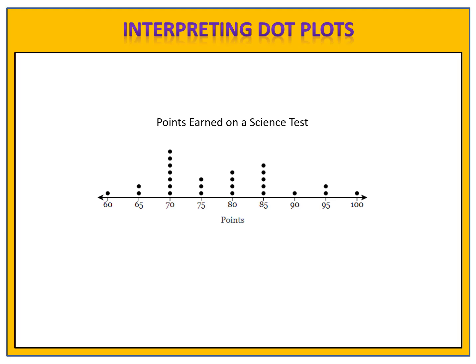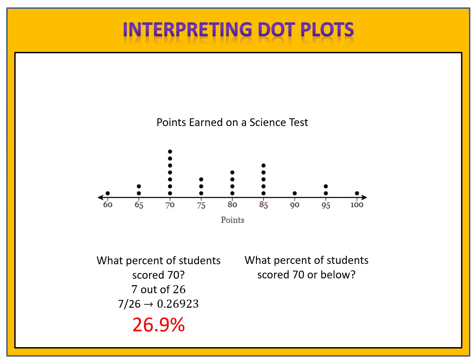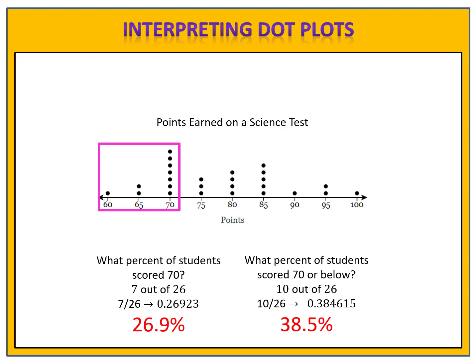We could also ask some questions involving percentages. What percent of the students scored 70? Looking at 70, we see that there are seven dots. Seven out of 26 is approximately 0.26923, which is about 26.9%. What percent of students scored 70 or below? We look at the scores that are 70 or below and count the dots. There are ten of them. Ten out of 26 is approximately 0.384615, which converted to a percentage is approximately 38.5%. So about 38.5% of the students scored 70 or below.